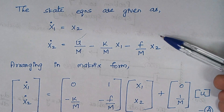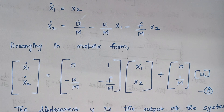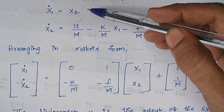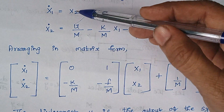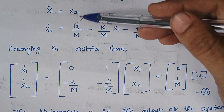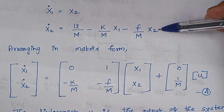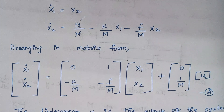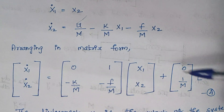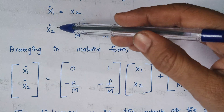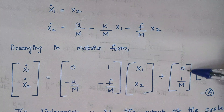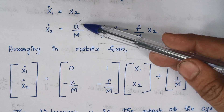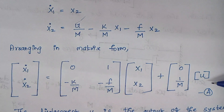Now we are going to represent the state equations in matrix form. We have x1 dot and x2 dot. In the x1 dot equation there is no x1 term, so its coefficient is 0, and the coefficient of x2 is 1. In x2 dot, the coefficient of x1 is −k/m and x2 is −f/m. The first expression contains no u term, so it is 0, and the second expression has coefficient of u equal to 1/m.